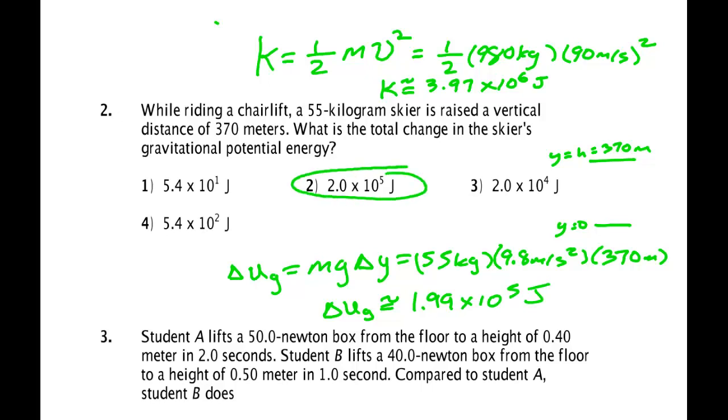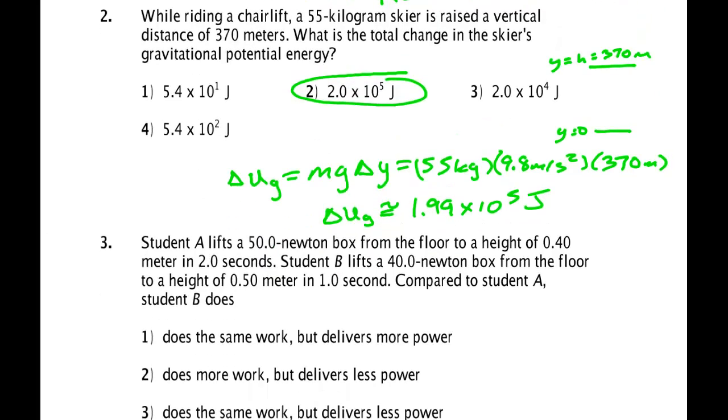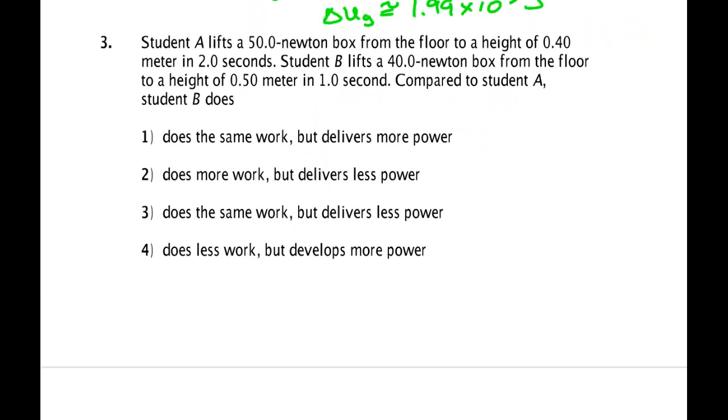Next there's a problem on lifting a box. It says student A lifts a 50 Newton box from the floor to a height of 0.4 meters in 2 seconds. So the student does work by putting energy into gravitational potential energy because if it lifts it up, gravity is pulling the opposite direction.